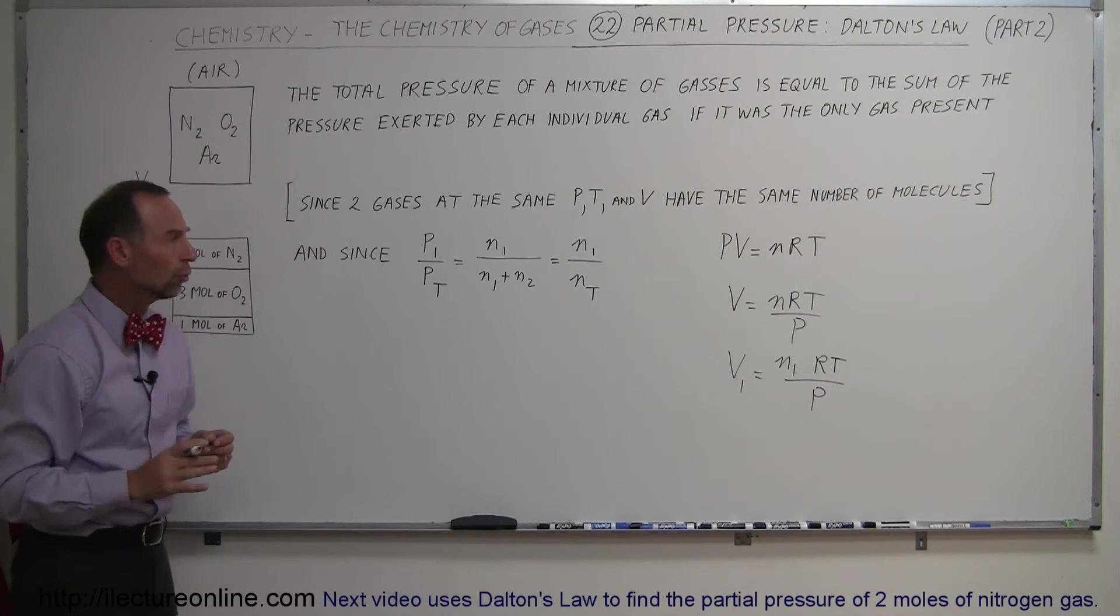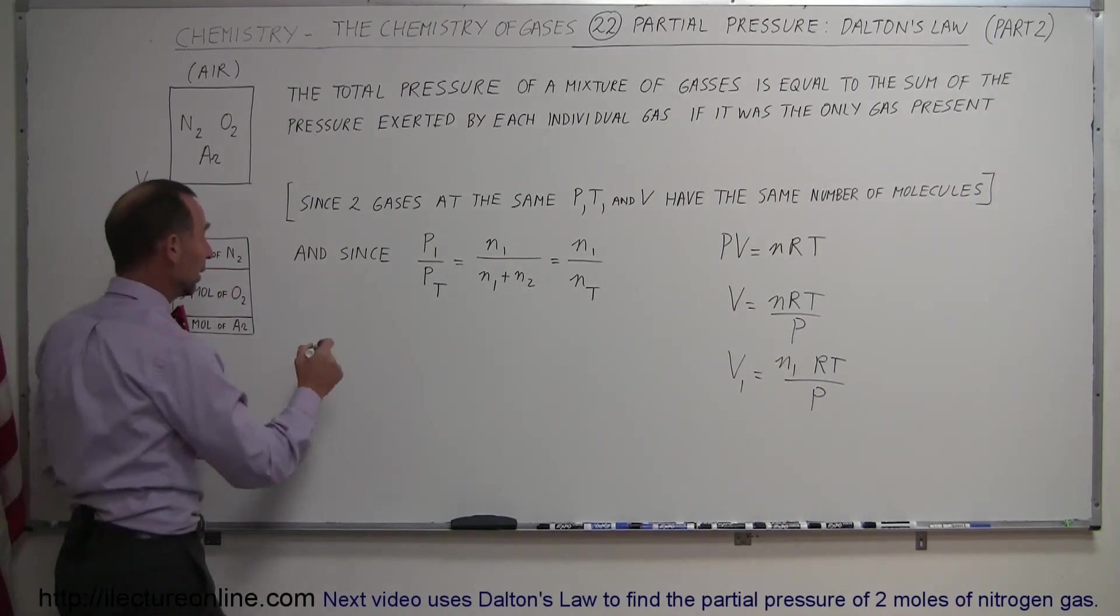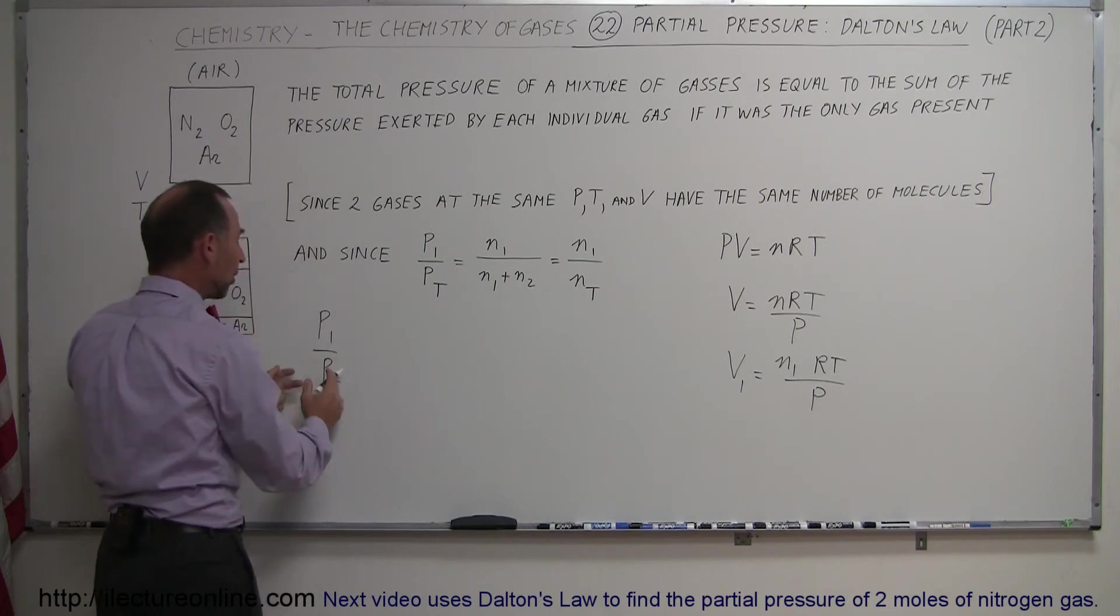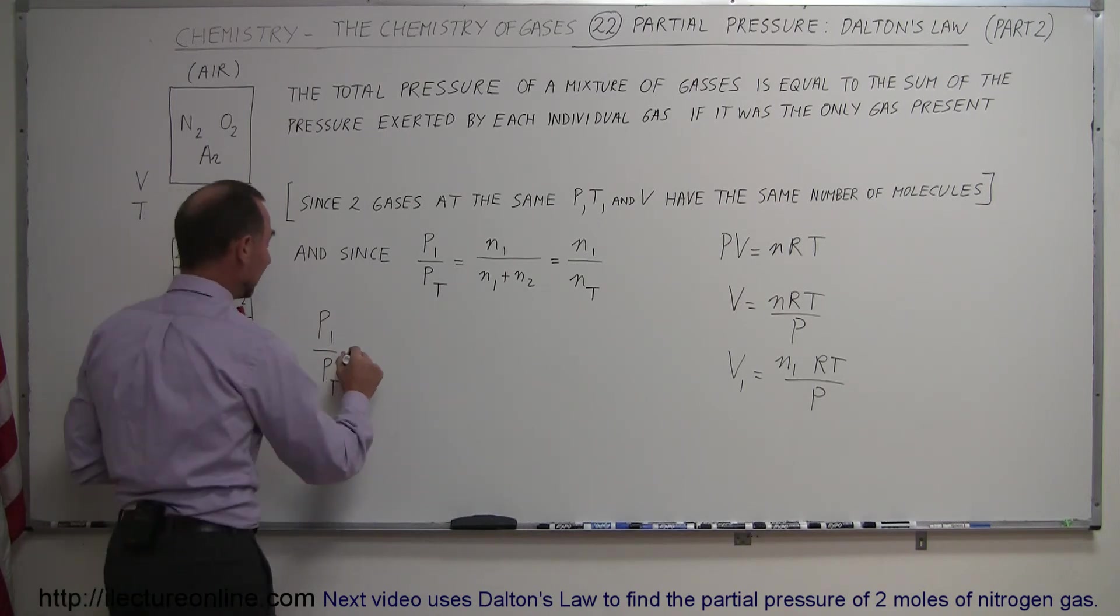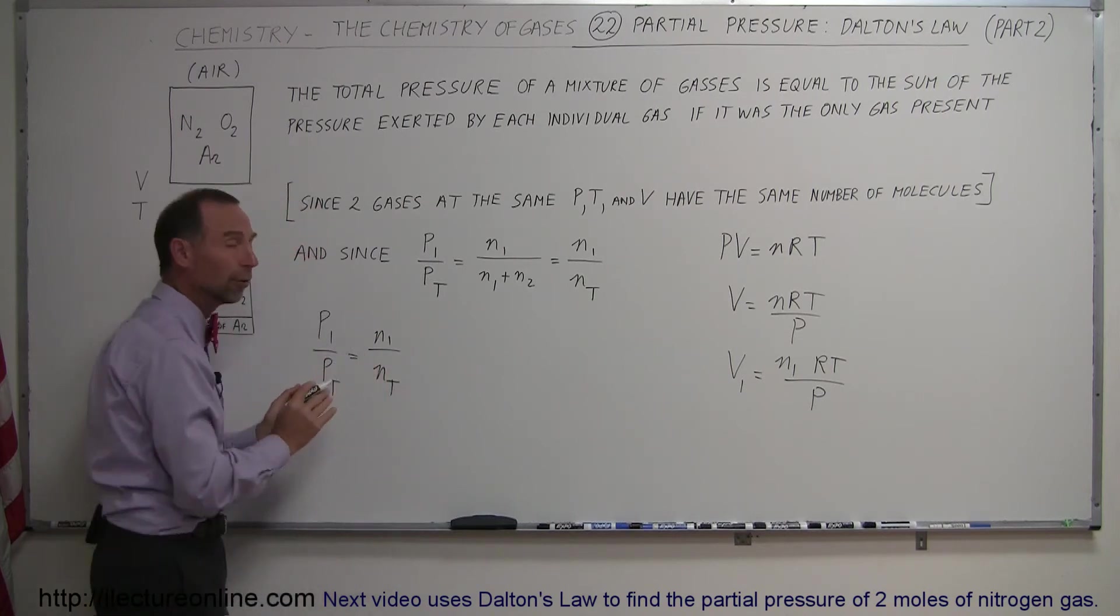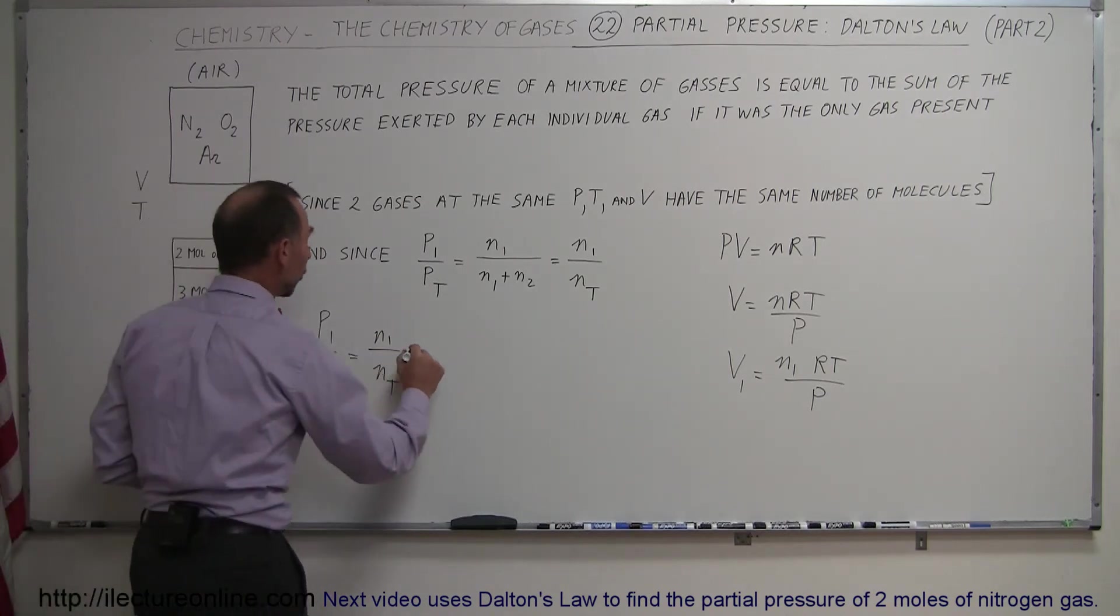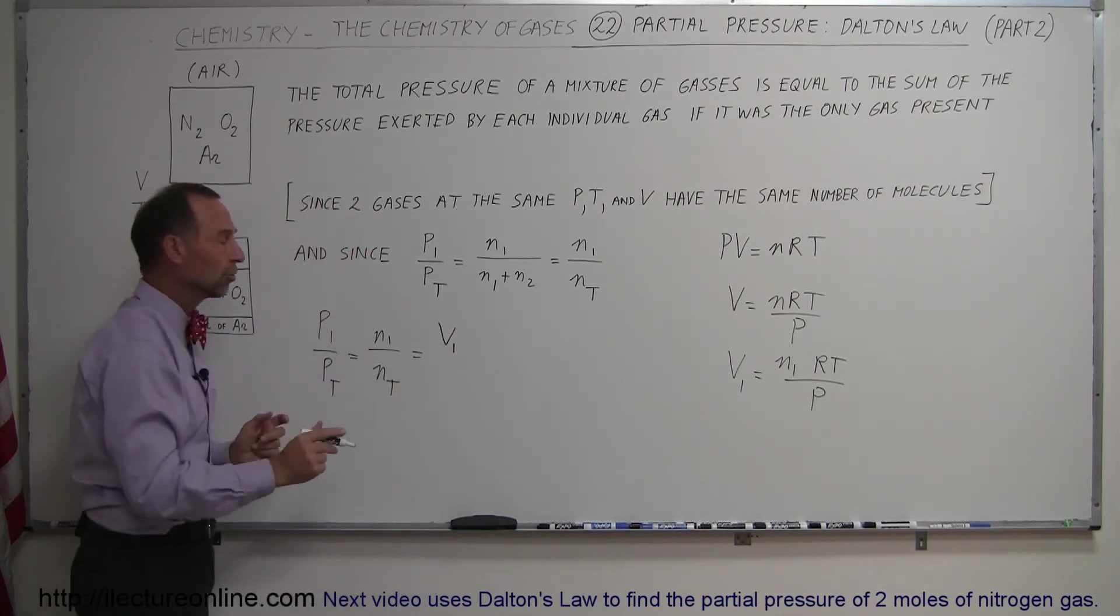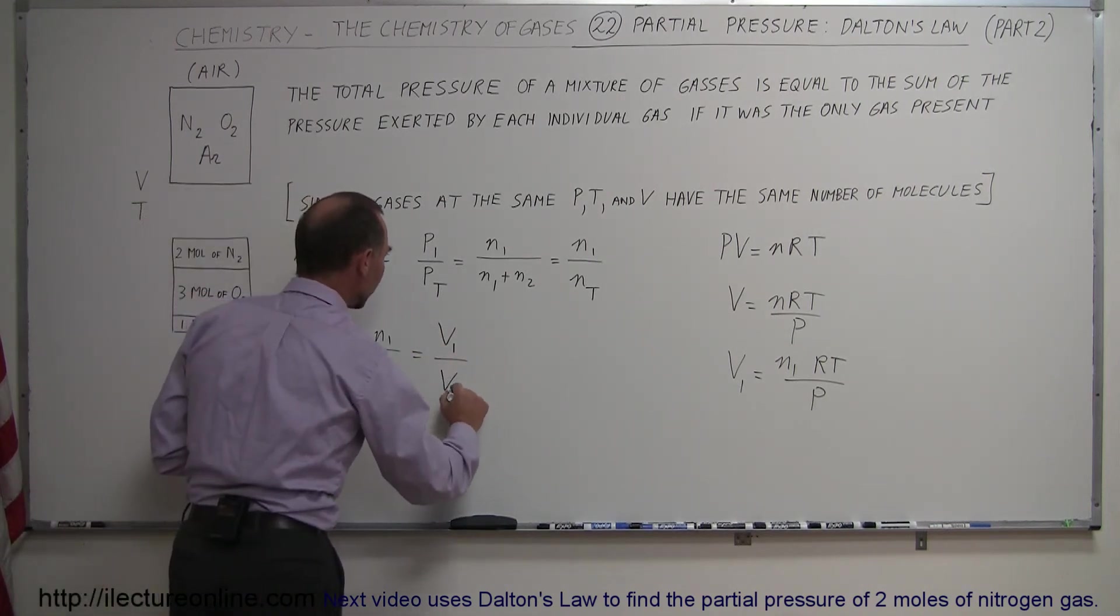So since that's true, we can then expand this equation. We can then write that P1 over the total pressure, so the partial pressure of gas one, is equal to the number of moles of gas one divided by the total number of moles present in the gas mixture, which therefore also has to be equal to the amount of volume that gas contributes divided by the total volume of the mixture.